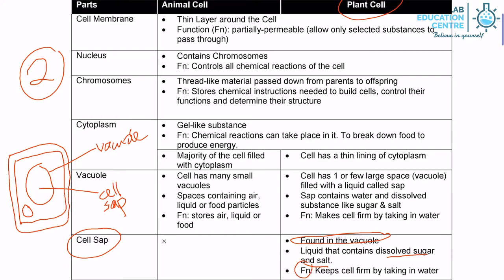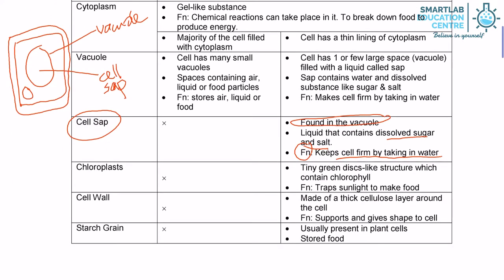The function of cell sap is to keep the cell firm by taking in water. Next, let's take a look at chloroplasts. Chloroplasts are normally found around here, as you can see, slightly smaller compared to the nucleus. This dense circle I'm drawing here is your nucleus. Those oblong structures — they are the chloroplasts.